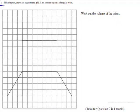Question 7. The diagram drawn on a centimeter grid is an accurate net of a triangular prism. Work out the volume of the prism.